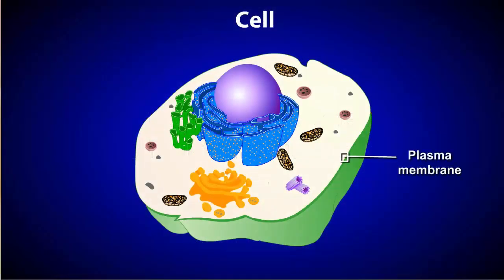All cells have an outer membrane, called a plasma membrane, which acts as a boundary between the outside and inside of a cell.